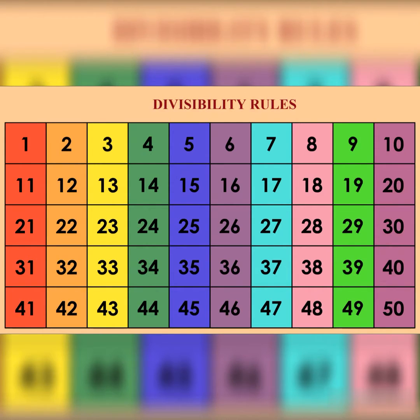Divisibility by 3 – a number is divisible by 3 if the sum of its digits is a multiple of 3.